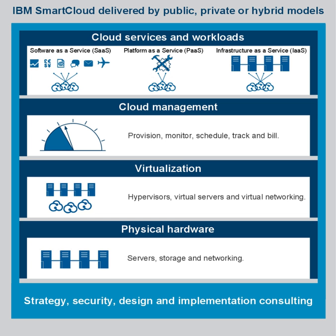IBM Cloud Computing emerged from the union of its mainframe computing and virtualization technologies. Known as the original virtualization company, IBM's first experiments in virtualization occurred in the 1960s with the development of the virtual machine on CP40 and CP67 operating systems. CP67, a hypervisor used for software testing and development, enabled memory sharing across VMs while giving each user their own virtual memory space.